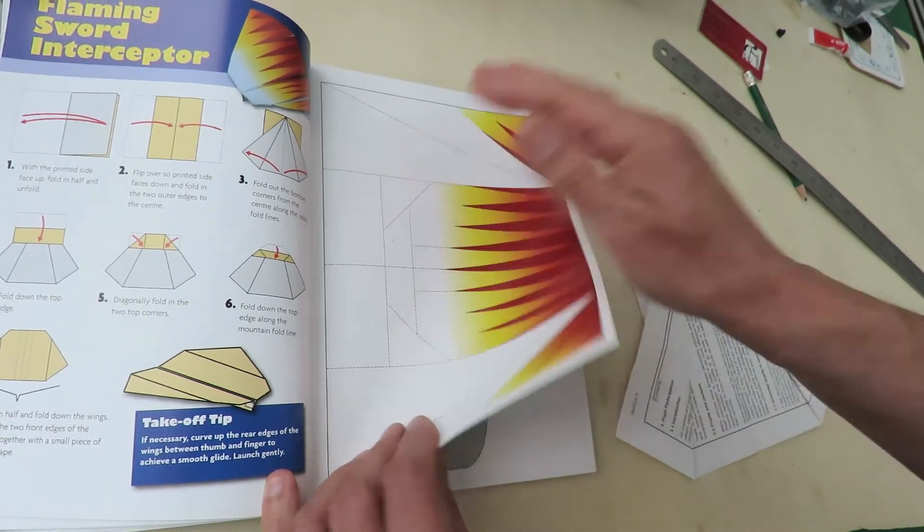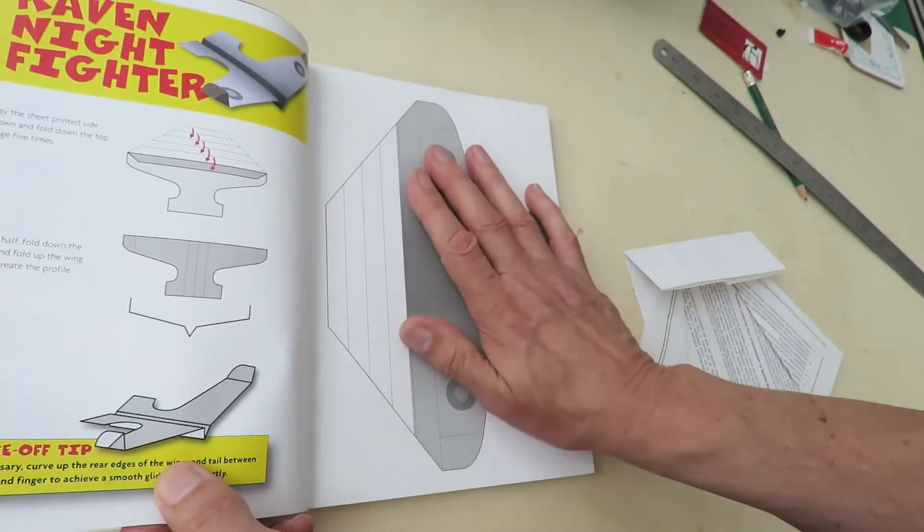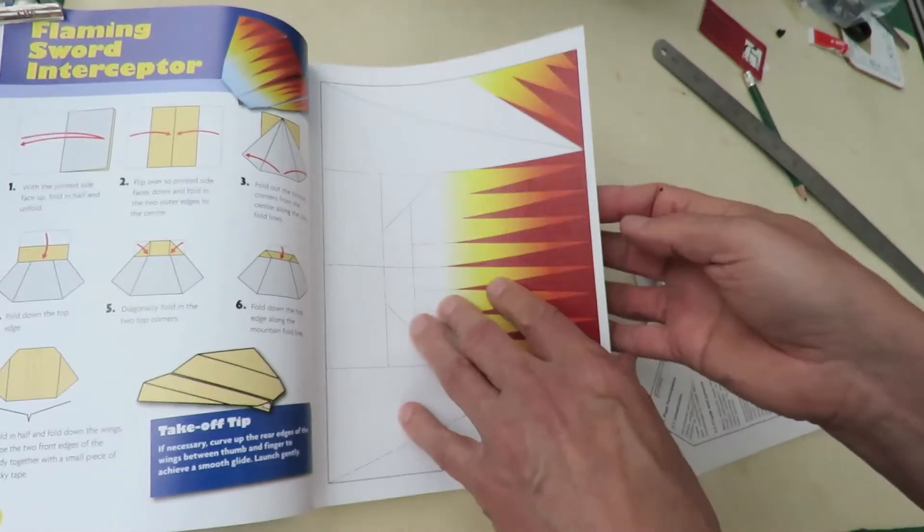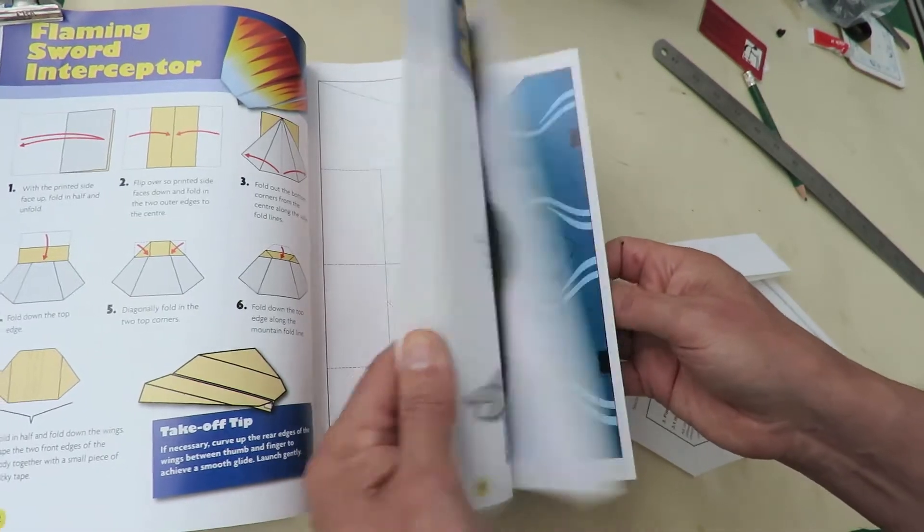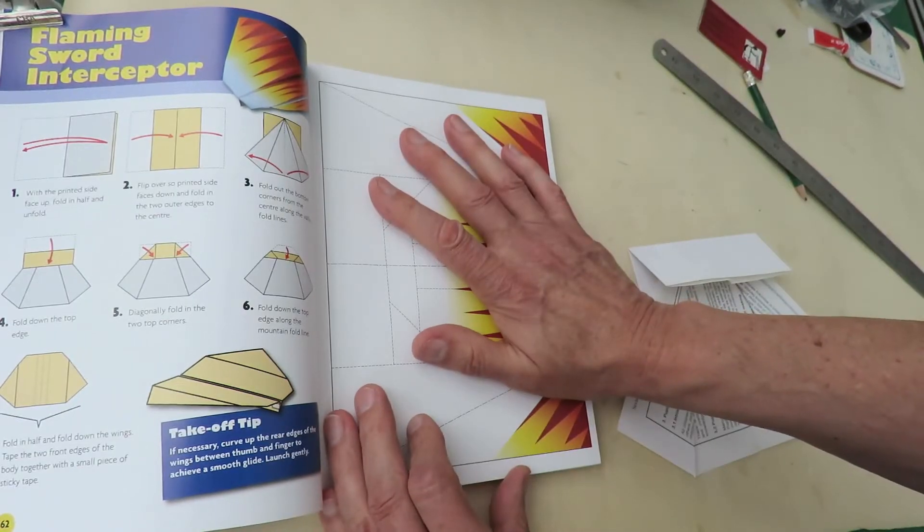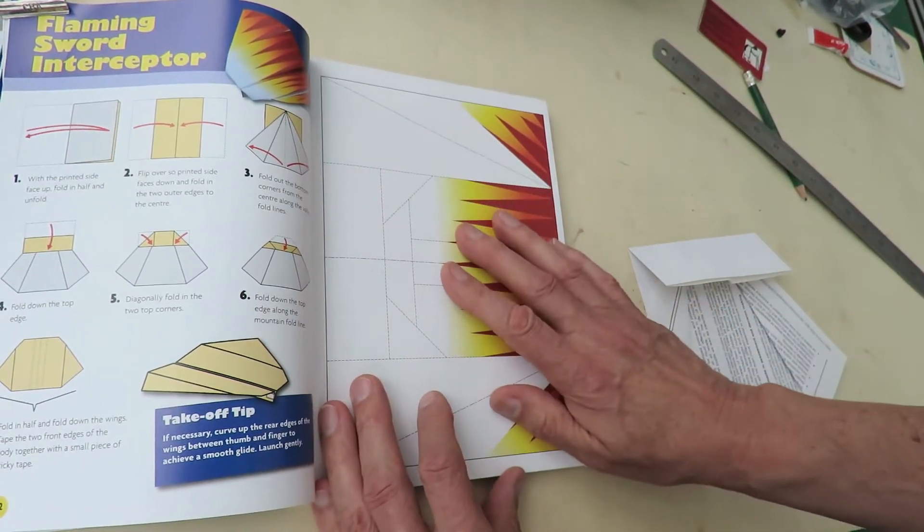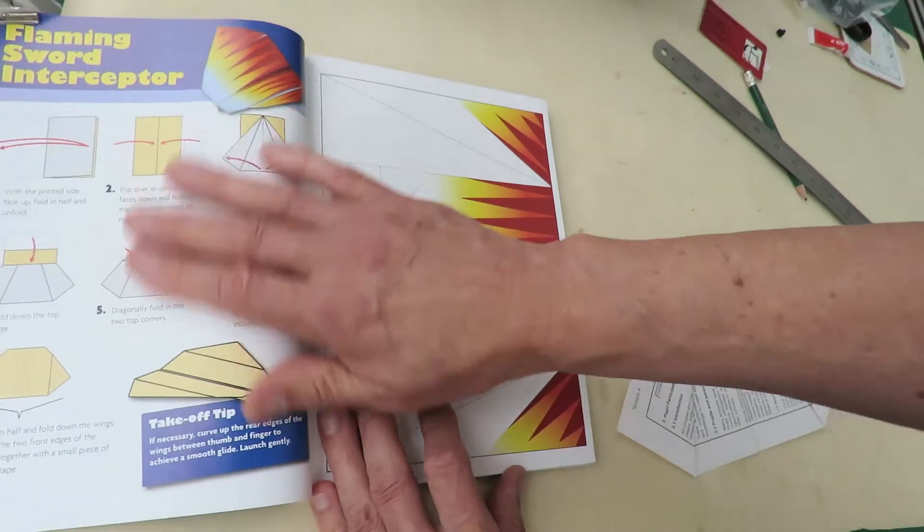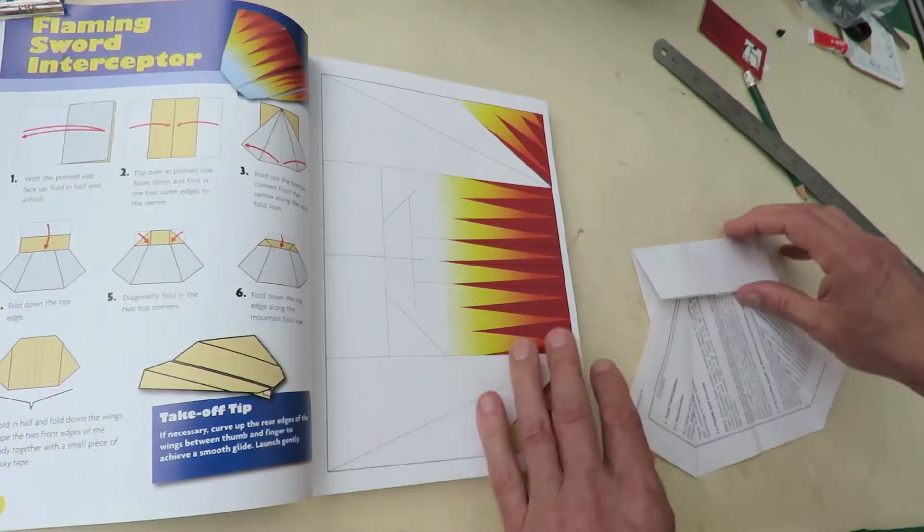But, if you do that, then you lose the instructions for the next one. So, you either start from the back and work forwards, or you photocopy each page and print it. Or, you do what I'm doing, which is follow the diagram, but use a piece of A4 paper.